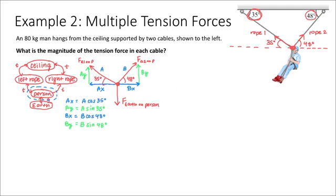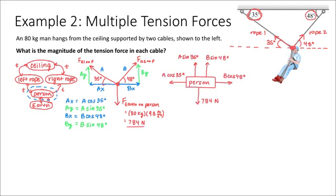The force the earth exerts on the person equals the mass, 80 kilograms, times our gravitational constant 9.8, which gives a value of 784 newtons. We're going to redraw our force diagram now that we have all of our components, calling the gravitational force 784 newtons for simplicity. The redrawn force diagram shows both y components pointing vertically and the x components — Bx to the right and Ax to the left — expressed using the trigonometric expressions obtained earlier.